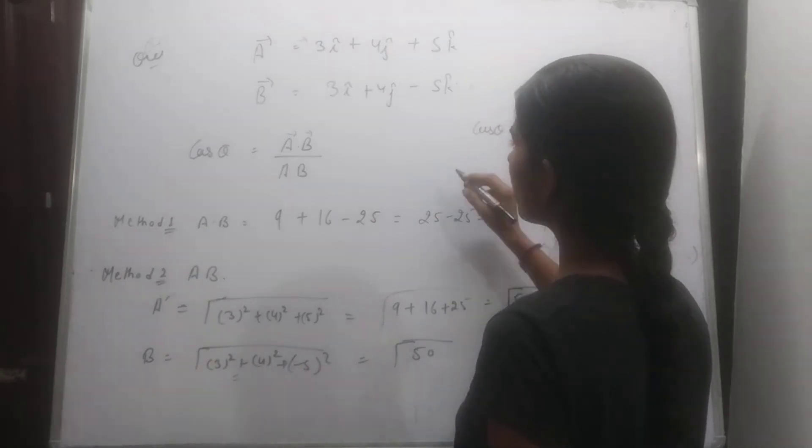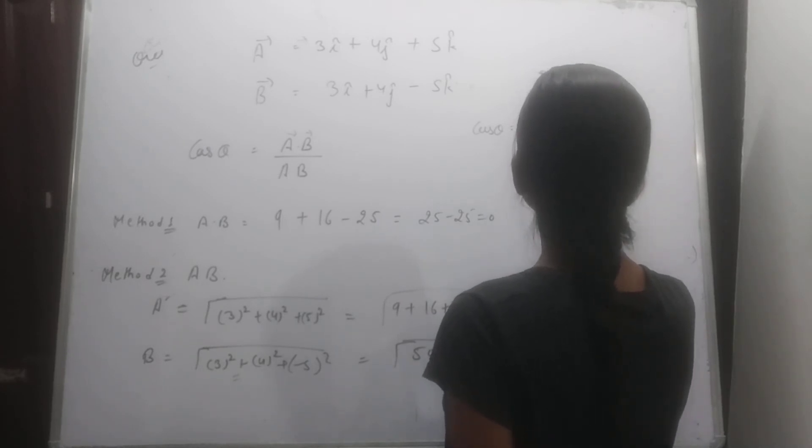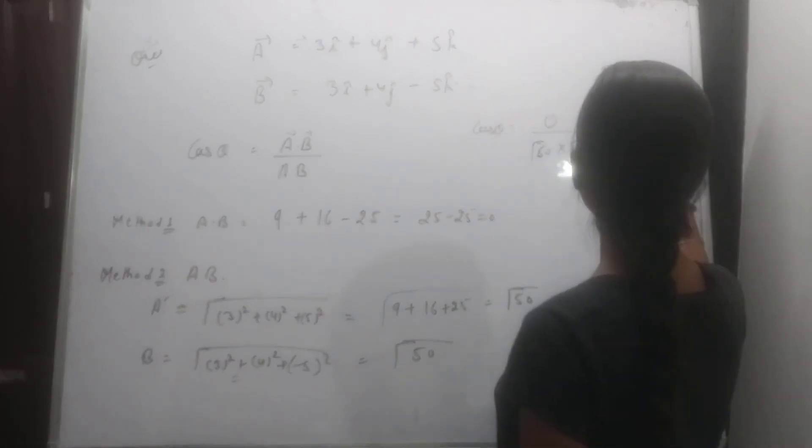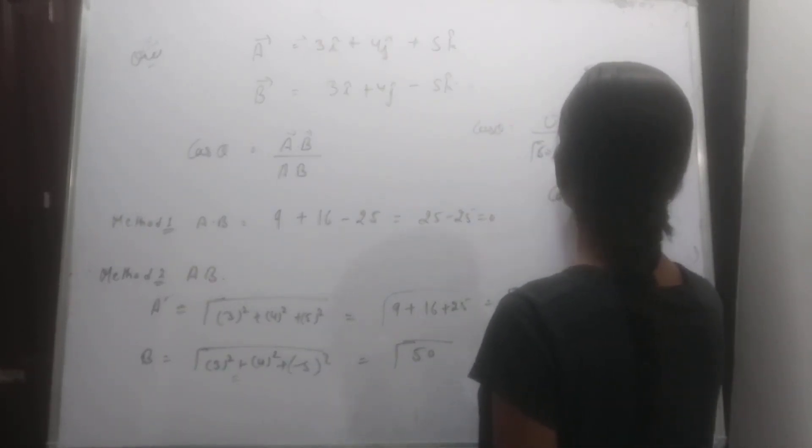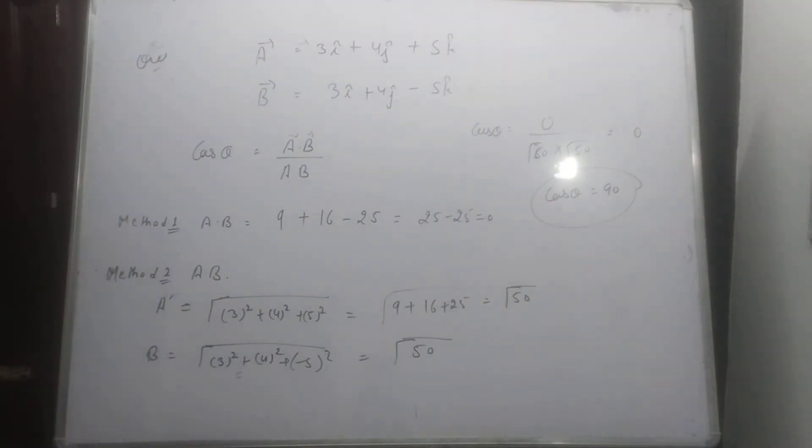Cos theta equal to kya ho jayega. Cos theta equal to a or b kya hai, 0 divide by root 50 into root 50 equal to kya hai, 0. To cos theta equal to kya hai, 90 degree. That is the answer. Theta equal to kya jegan donon ke beech 90 degree. Thank you.